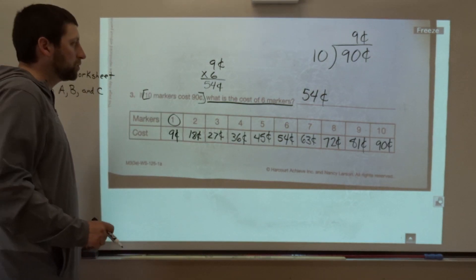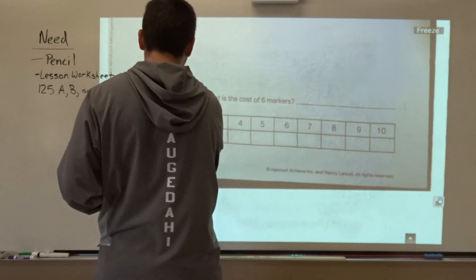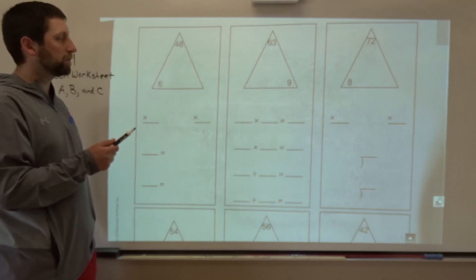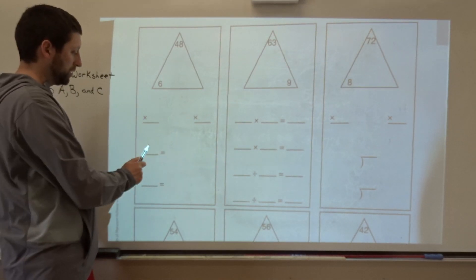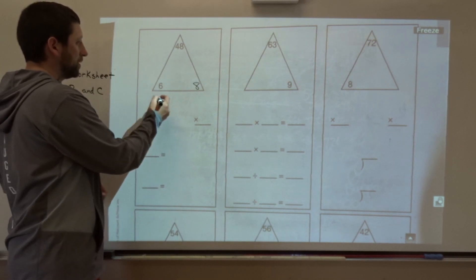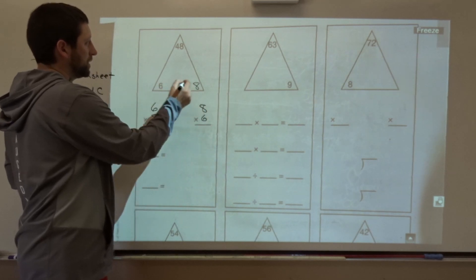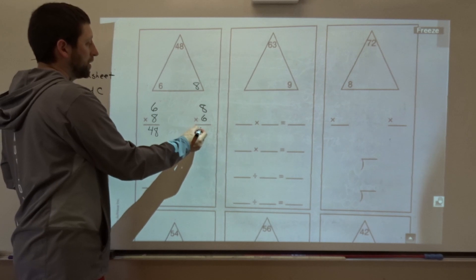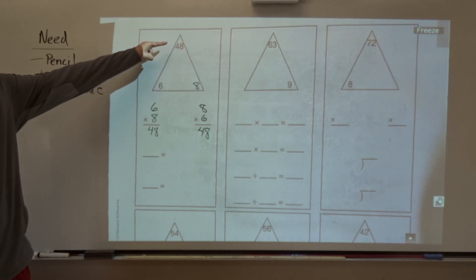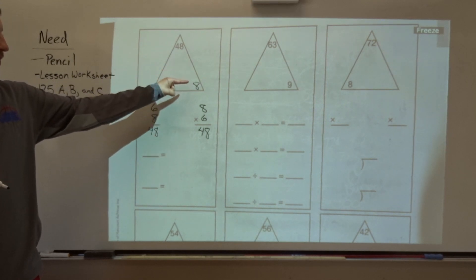That wraps up worksheet 125A. Now let's go to the B side. On worksheet 125B we have fact cards, and we need three numbers to make a fact family with two multiplication problems and two division problems. For the numbers forty-eight, six, and eight: six times eight equals forty-eight, and eight times six equals forty-eight. For division, we start at the top: forty-eight divided by six equals eight, and forty-eight divided by eight equals six.